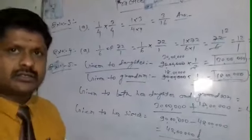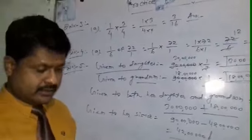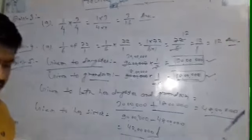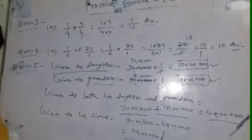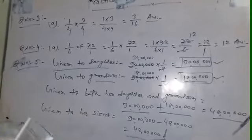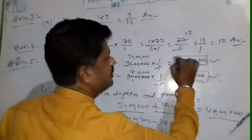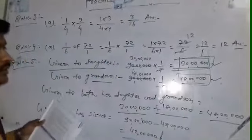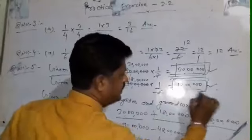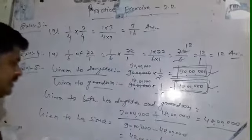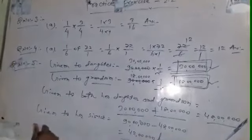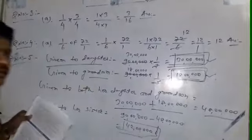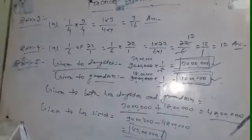Very easy question. So to summarize: her daughter received 30 lakh, her grandson received 18 lakh, and her sister received 42 lakh. This is your answer.